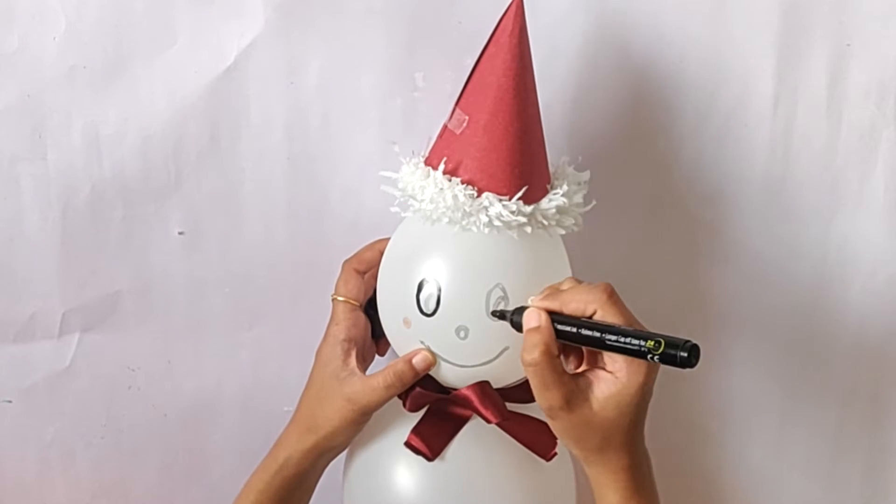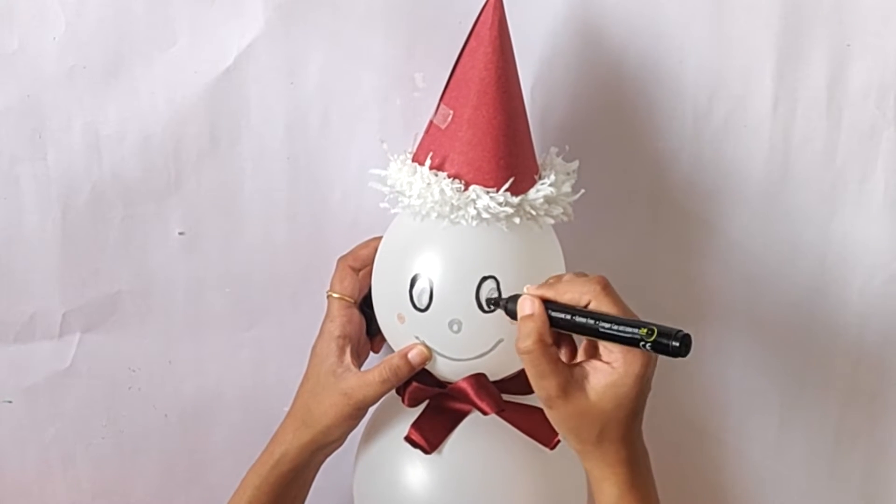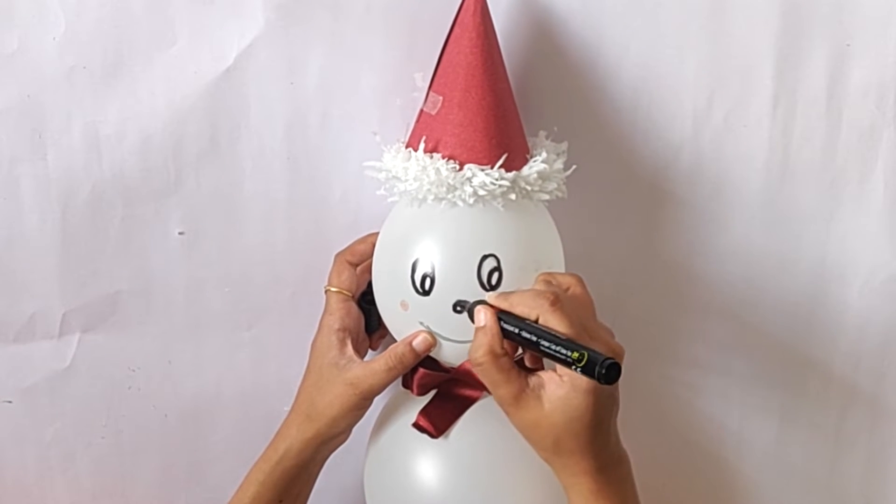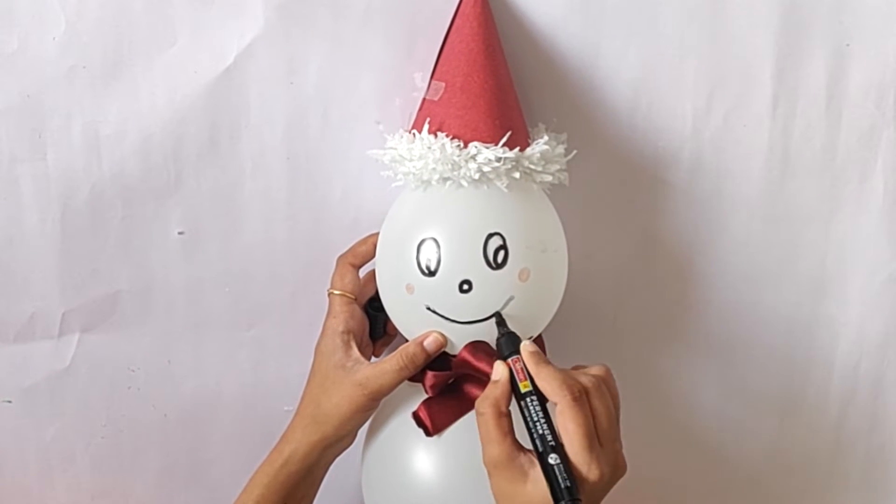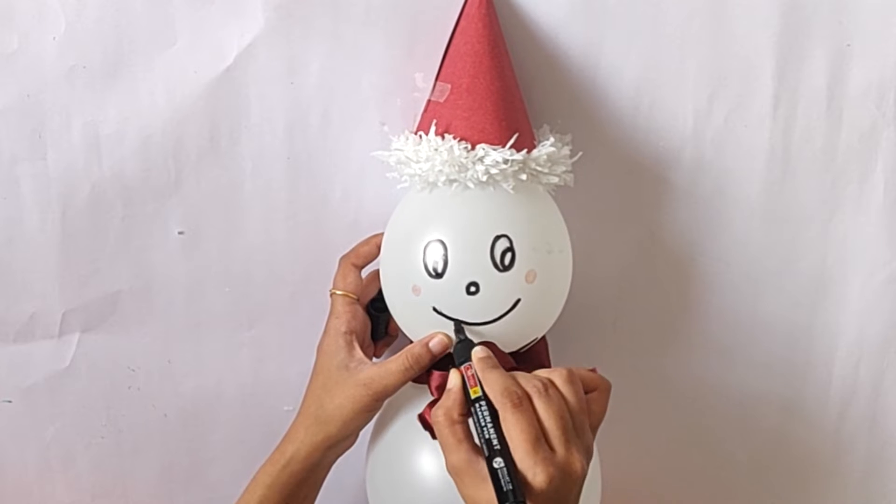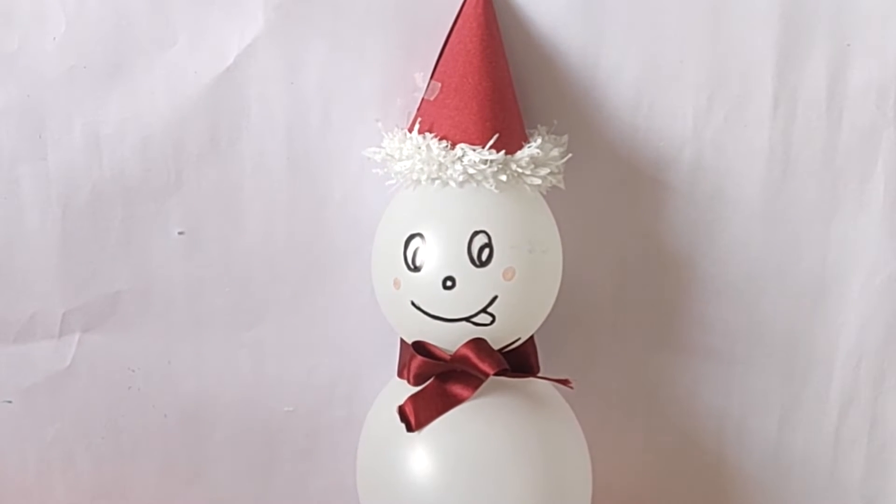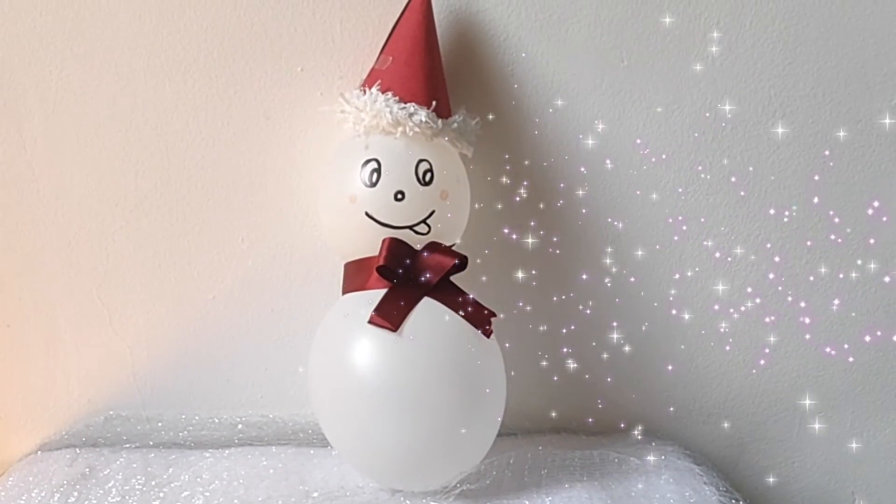Now making a collar bow for snowman using red lace. Actually, initially I made the face using sketch pen but it was looking so faded. That's why I used black permanent marker to draw the face on the balloon. And here is the cute snowman.